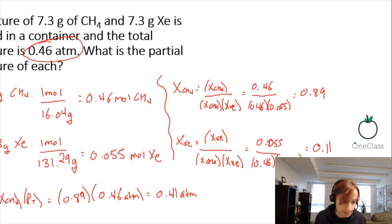And then doing the same for xenon, using the mole fraction of xenon times the total pressure. So that we calculated to be 0.11, which is unitless because it is just a fraction. And then our total pressure is 0.46 atmospheres. So this partial pressure of xenon, in this case, is 0.05 atmospheres.